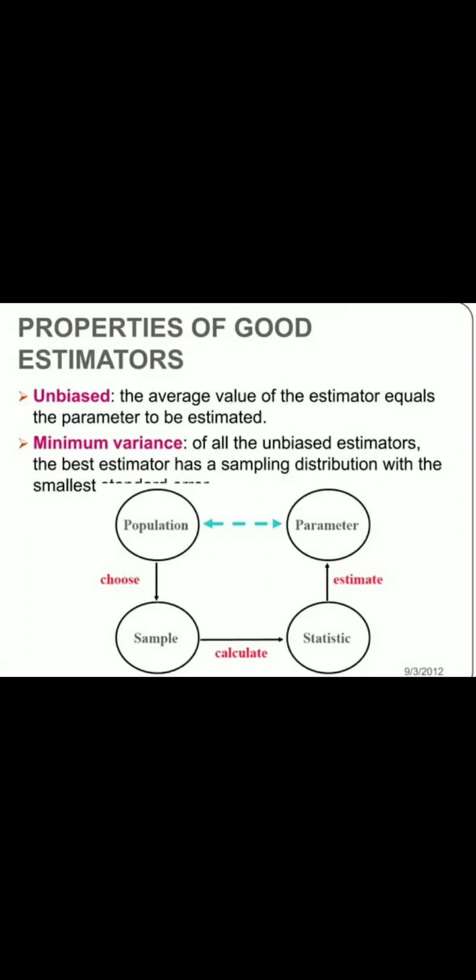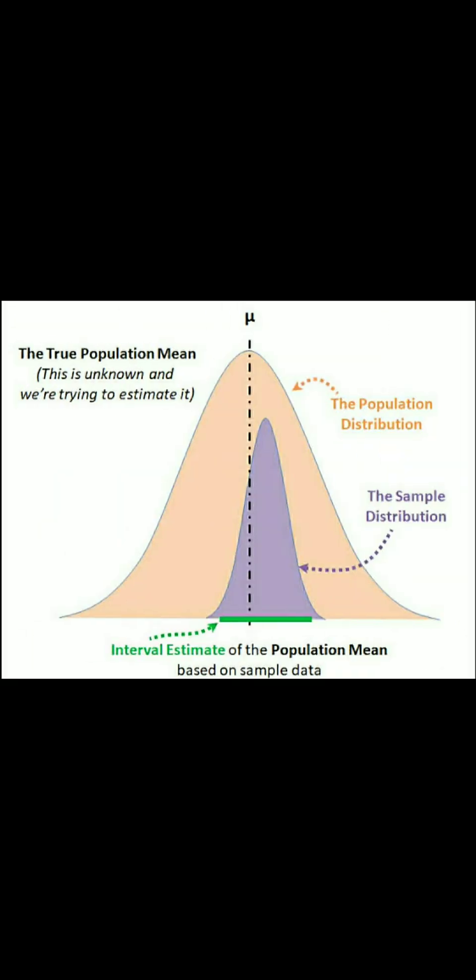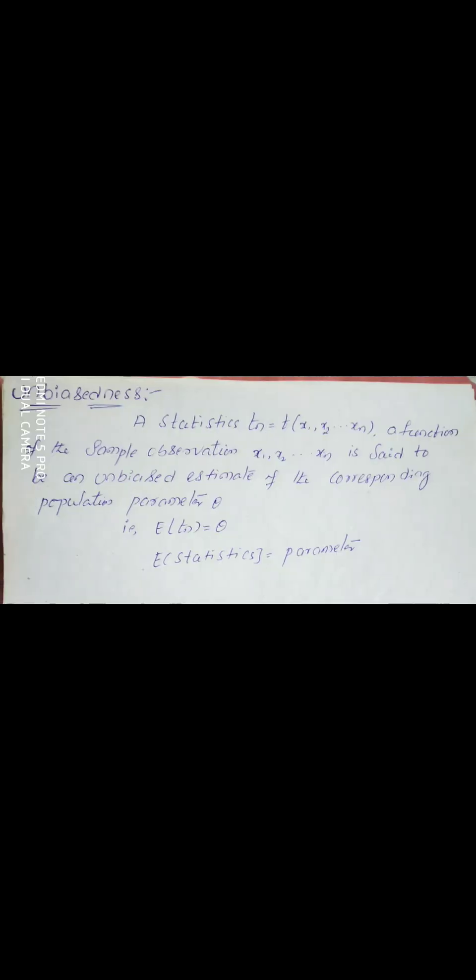Among the sufficient, unbiased, consistent, and efficient estimators, any estimator we have to evaluate as the best or good estimator. For example, in the binomial distribution with parameter n and p, we have to estimate the values of n and p, and we decide whether they are good estimators by using point estimation.